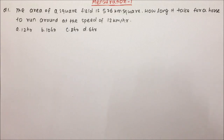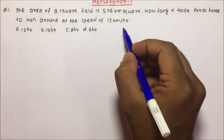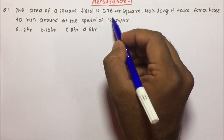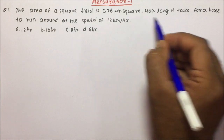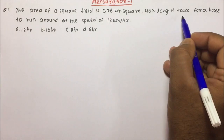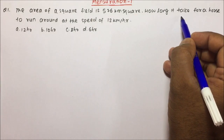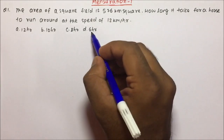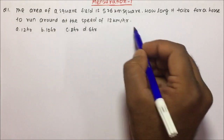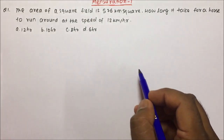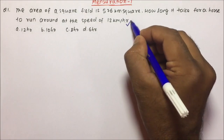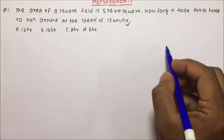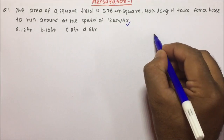Our first question is: the area of a square field is 576 km². How long will it take for a horse to run around at the speed of 12 km per hour? This is a very good question, so let us see how we are going to deal with it.